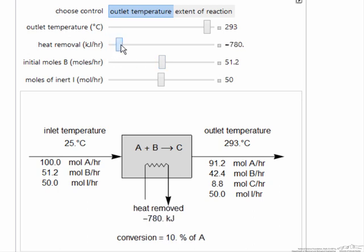If I remove heat - this is the amount of heat removal, and heat is negative, meaning energy is being removed from the system - then the conversion increases because I've constrained this temperature.